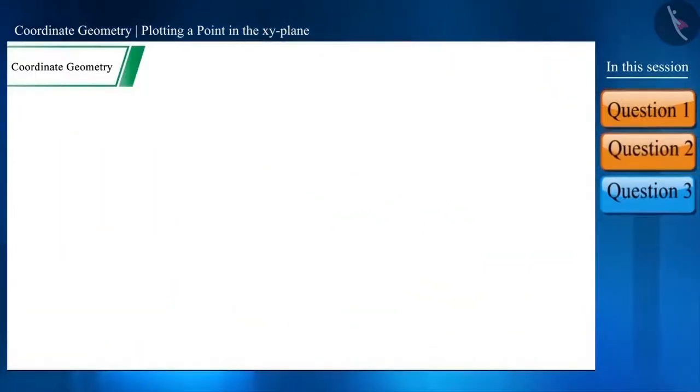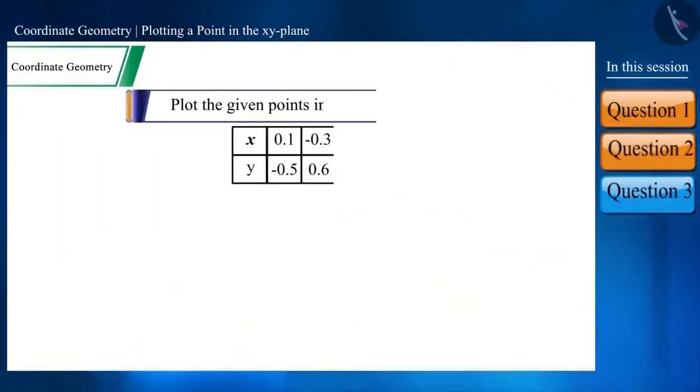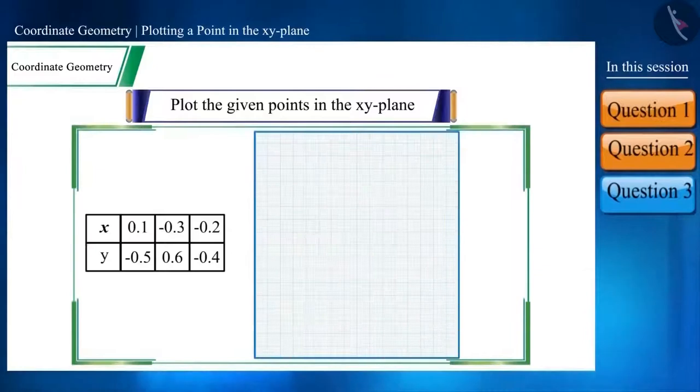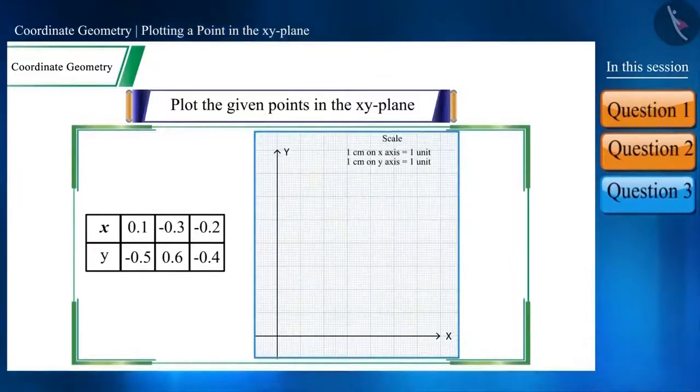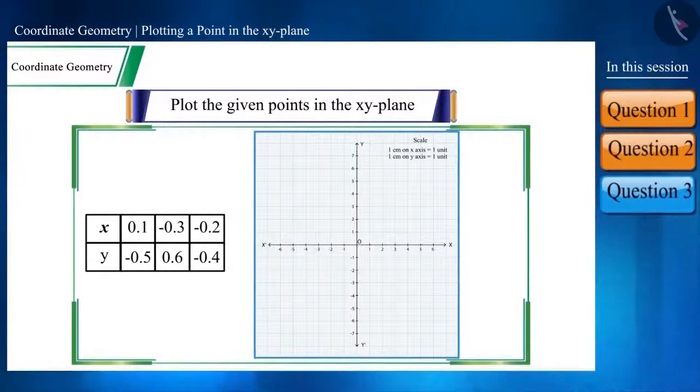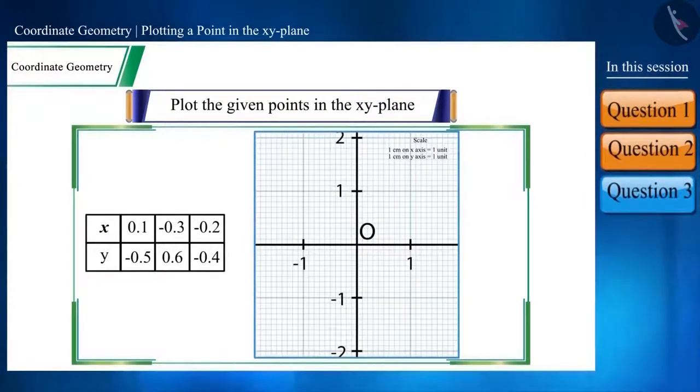Let us now take the next question, plot the given points on the graph. Friends, we will first determine the scale. Like always, let's take 1 cm equals to 1 unit. Now let's plot the given coordinate points one by one. The first point, 0.1, minus 0.5, will be plotted here. The second point, minus 0.3, 0.6, will be here. And the last point, minus 0.2, minus 0.4, here.